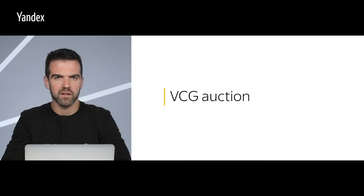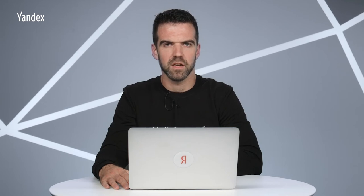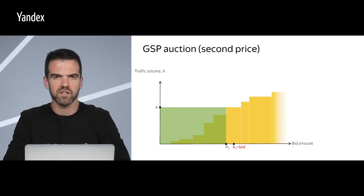The next topic is the auction system used in Yandex Direct. Nothing has changed in the auction — the same VCG auction continues to operate; the only changes are related to bidding and some visual changes in the interface. Let's recall what the VCG auction is and how it differs from the GSP, or second price auction, which was used until 2015. In the second price auction, the vertical Y axis represents the traffic volume the advertiser receives, and the horizontal X axis shows the bid they have set — the higher the bid, the more traffic. The advertiser sets a bid b1, and in the second price auction, the click price is determined by the nearest competitor's bid, b2.